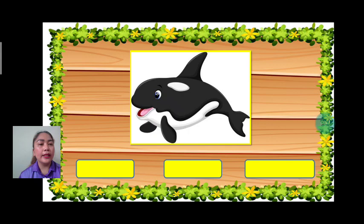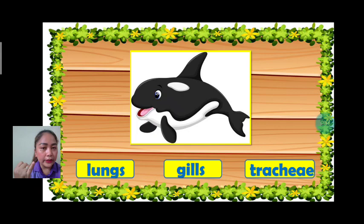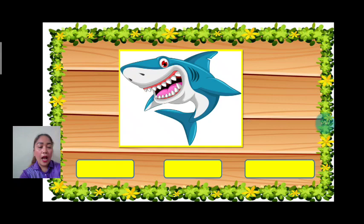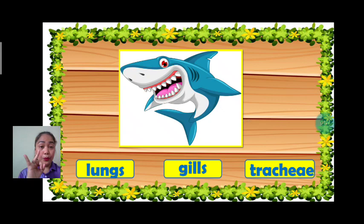Next, our vocabulary is killer whale. How does a killer whale breathe? Lungs, gills, or trachea? The answer is lungs. Good job. Next we have shark. How does a shark breathe? Lungs, gills, or trachea? Good job — gills.